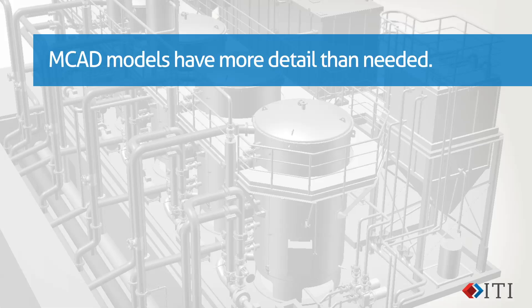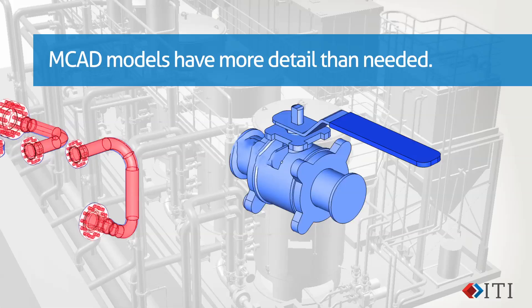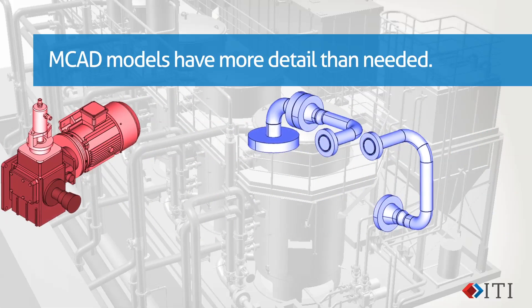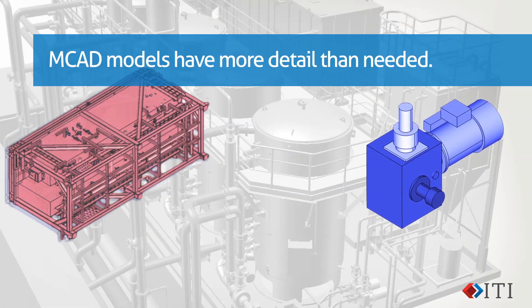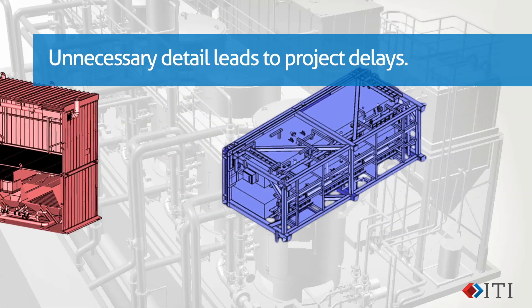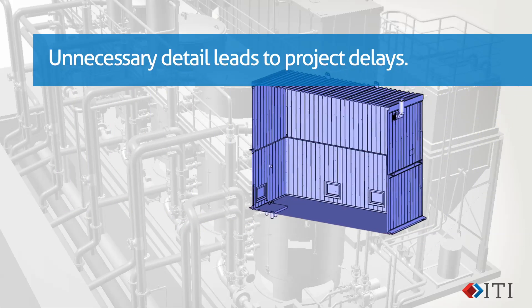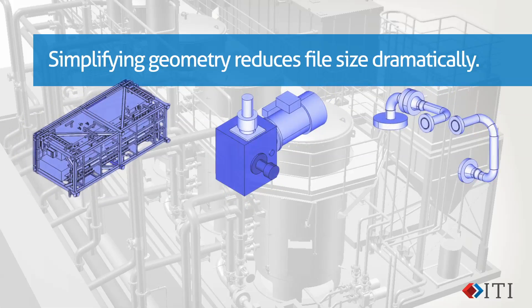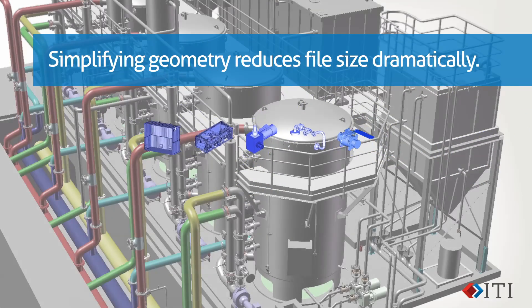The reason? Models from mechanical CAD systems contain more detail than needed for integration into the full plant layout — in fact, significantly more detail than can be consumed by most recipients. The unnecessary detail is what leads to project delays. These challenges can be avoided if you can simplify the geometry and reduce file size before integrating CAD assemblies into 3D plant design systems.